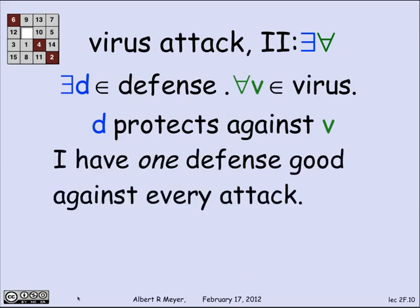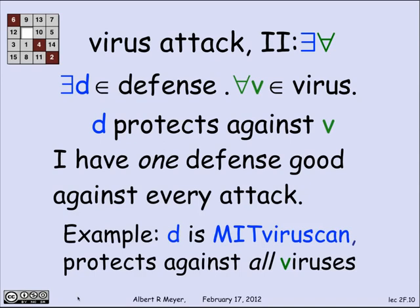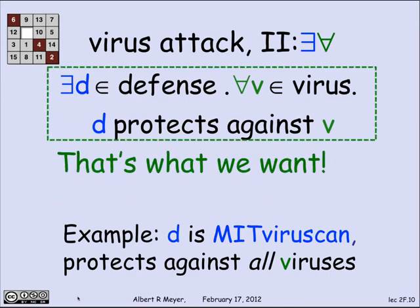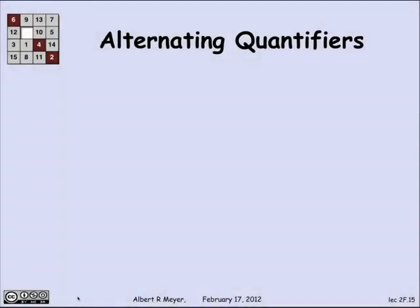For example, if d is MIT virus scan, then it would be wonderful. It was true that d protects against all viruses. There's one defense good against every attack. That's what we want, because it's a lot cheaper.